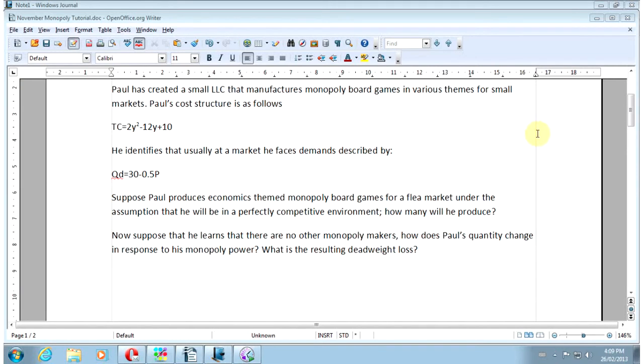So Paul has created a small company that manufactures monopoly board games in various themes for small markets. Paul's cost structure is as follows: Total cost is 2y squared minus 12y plus 10.